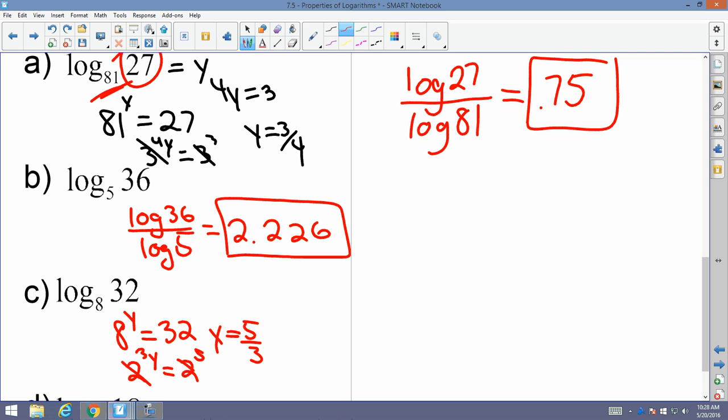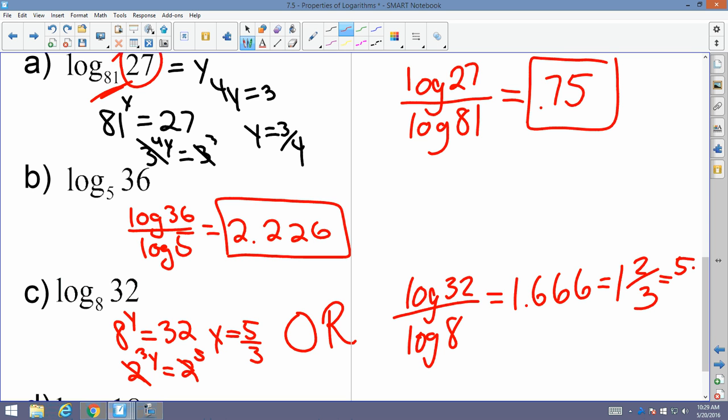Or if it was on an SAT and you're not restricted by a calculator, you could have used a change of base. And that's going to be log of 32 divided by log of 8. On your calculator, you're going to get 1.6666, which is 1 and 2 thirds, which is the same as 5 thirds.